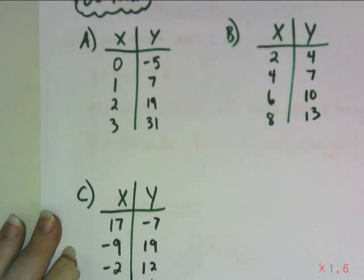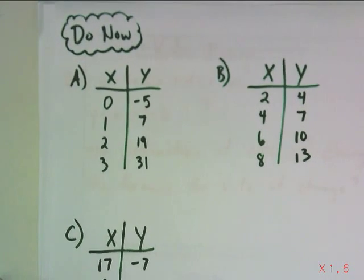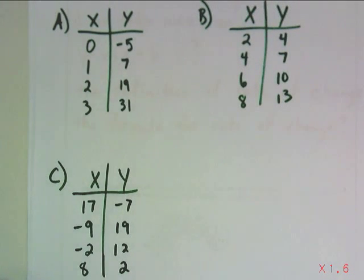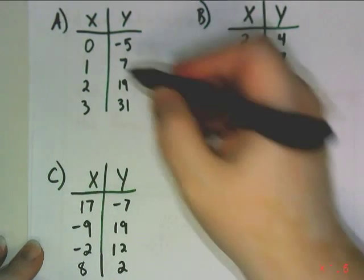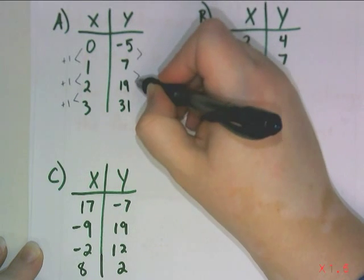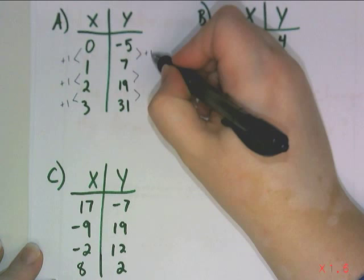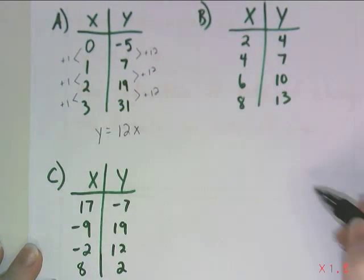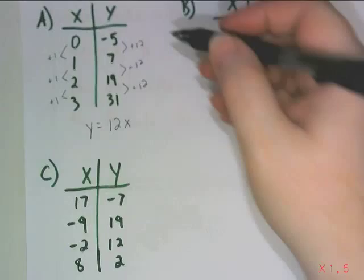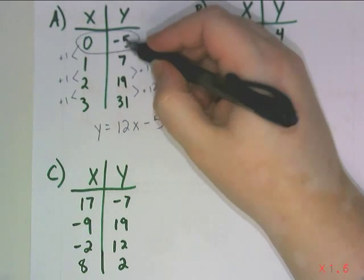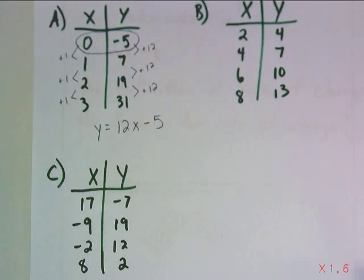Now it's your turn — we've got some Do Now problems. We want you to write the equation for all three tables. For the first table, x values are increasing by 1, so it's easy to find the rate of change. Drawing in the bug arms, all y values are increasing by 12, so I have 12x. The y-intercept is at x equals 0, y equals negative 5, so minus 5 is my constant. The equation is y equals 12x minus 5.